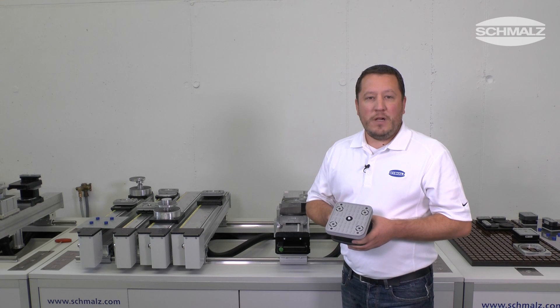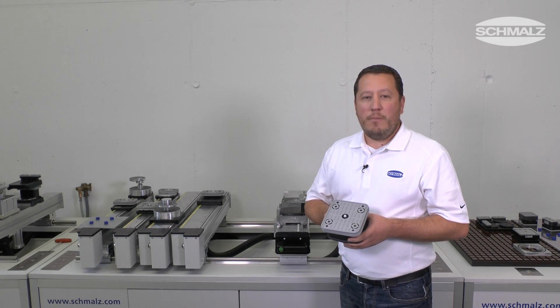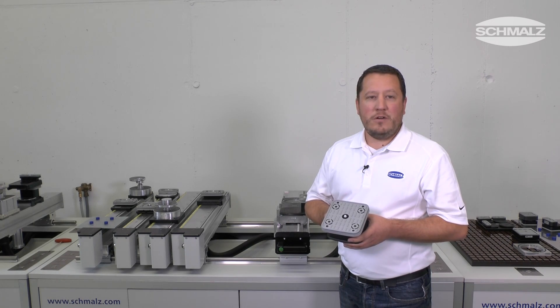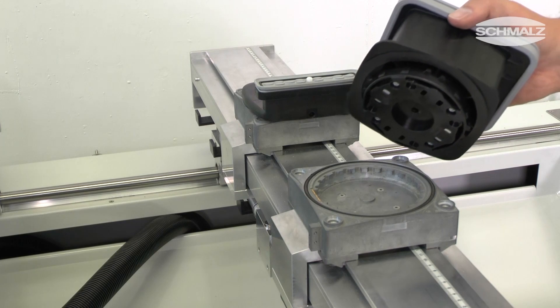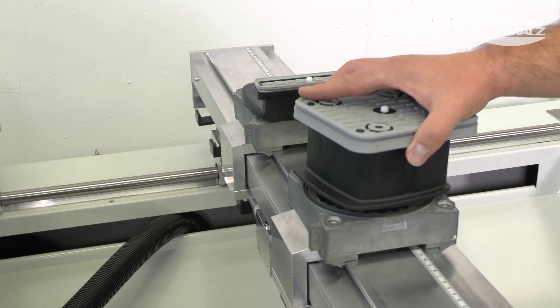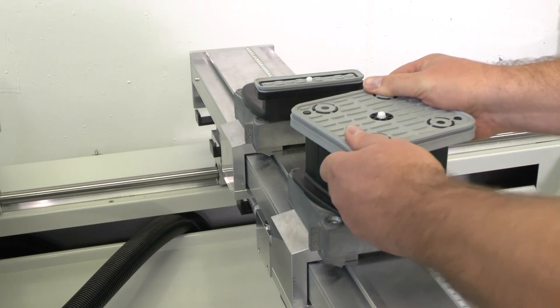Of course, Schmalz also offers clamping solutions for CNC machines made by the Italian manufacturer Biese. They are designed to perfectly match the equipment delivered with the new Biese machine and to be used with the existing standard mounting.